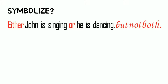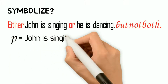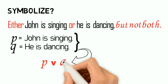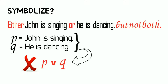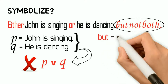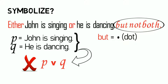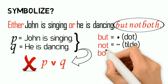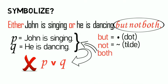So how do we symbolize this statement then? If we let P stand for 'John is singing' and Q for 'he is dancing,' we can come up with 'either P or Q,' but it's not yet complete. We need to take into consideration the phrase 'but not both.' If we recall the discussion on conjunctive statements, the symbol for 'both' is the dot, and from the discussion on negative statements, the symbol for 'not' is the tilde. The word 'both' in the statement refers to 'John is singing' (P) and 'he is dancing' (Q).